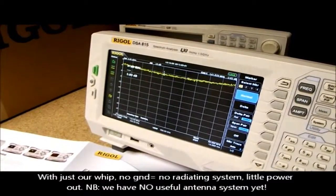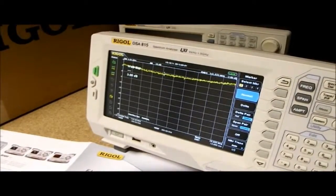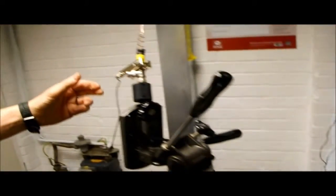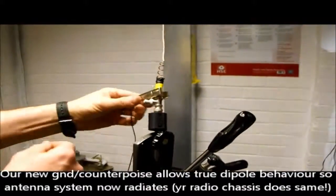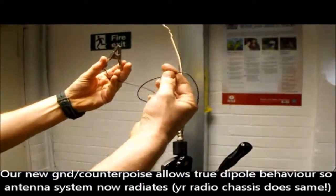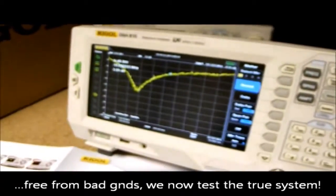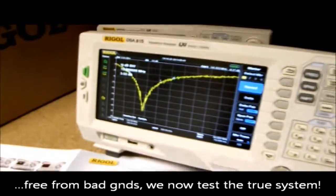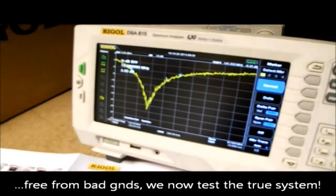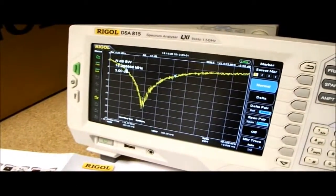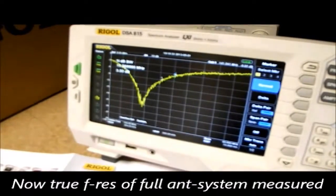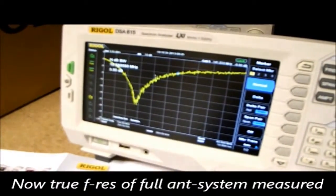What I'm now going to do is to attach a proper ground plane to the antenna system. So all I've done is to clip a piece of resonant wire onto the antenna system. Now if we look at the trace, you can see that there's a very clear resonance. But the resonance, again, is at about 135 MHz instead of 141 MHz. And that is the accurate resonance for that antenna.